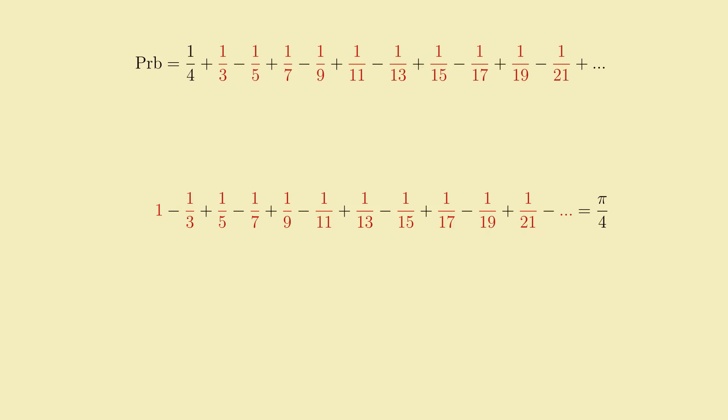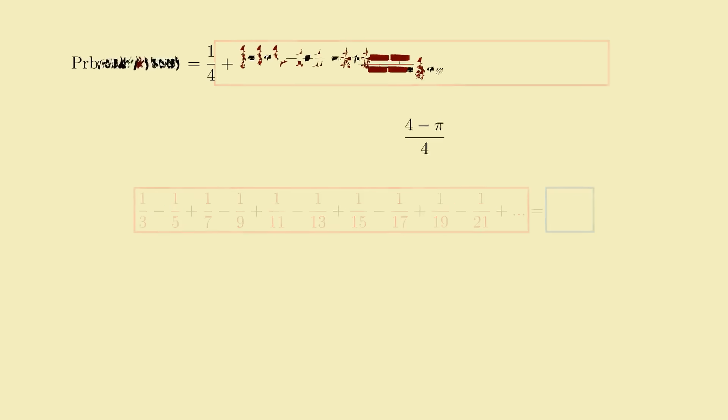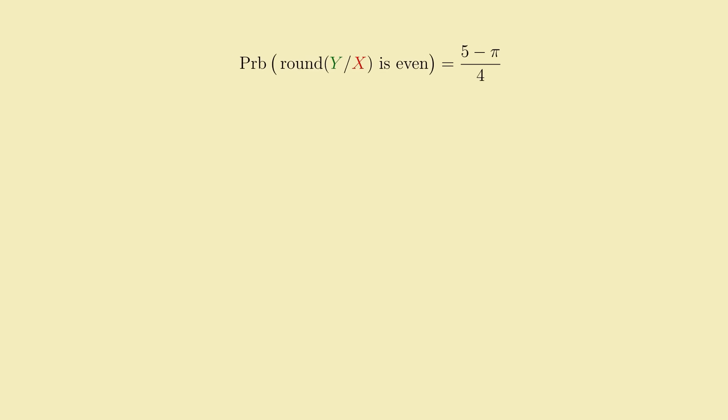And if I rearrange this equation slightly, by subtracting 1 and taking the negative of both sides, we get that the red part of our probability series is 1 minus pi over 4. Or 4 minus pi all over 4. And so, substituting it in, we get the probability of rounding to an even number is, despite all odds, 5 minus pi all over 4. Or about 0.4646.